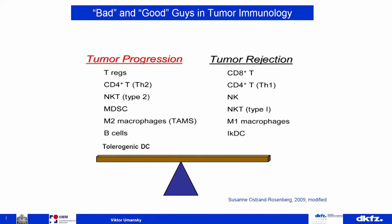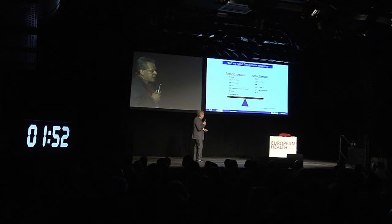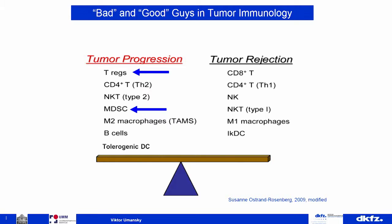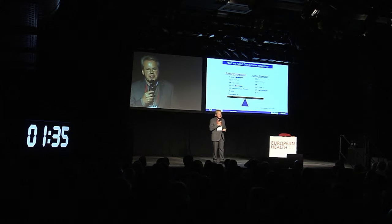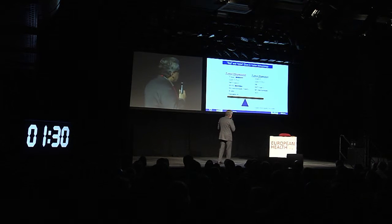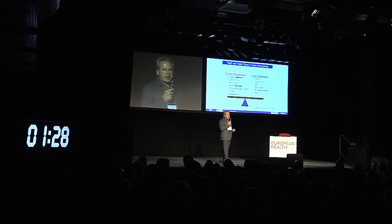We have immune cells which can reject tumors, like CD8 T-cells, CD4 T-helper cells, or NK-cells. But on the other side we also have the possibility for accumulation of immunosuppressive cells. Among them the most important are regulatory T-cells and so-called myeloid-derived suppressor cells. There are also other myeloid cells like M2 macrophages or tolerogenic dendritic cells, which are now united in the so-called regulatory myeloid cells.